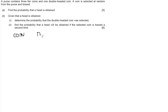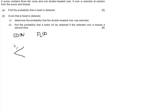The first event is choosing a coin from the purse, and the second event is flipping the coin we picked. If we draw branches for the types of coins we can pick, we can pick either one of the fair coins or the double-headed coin, which I'm going to call 'unfair' for argument's sake.